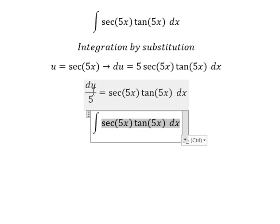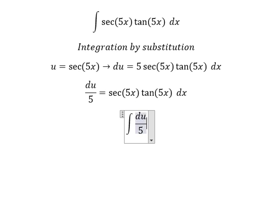This one we change to u over number 5. The integration of u, we have u over 5, and we put C. U is secant of 5x.